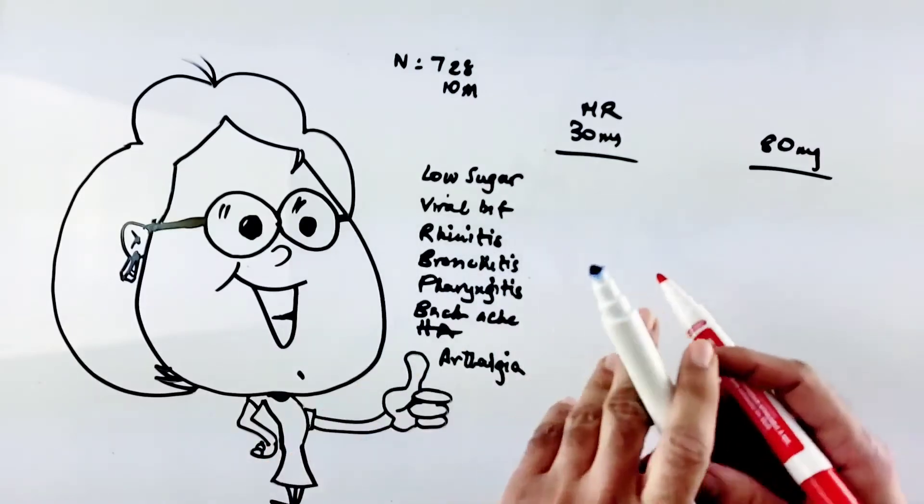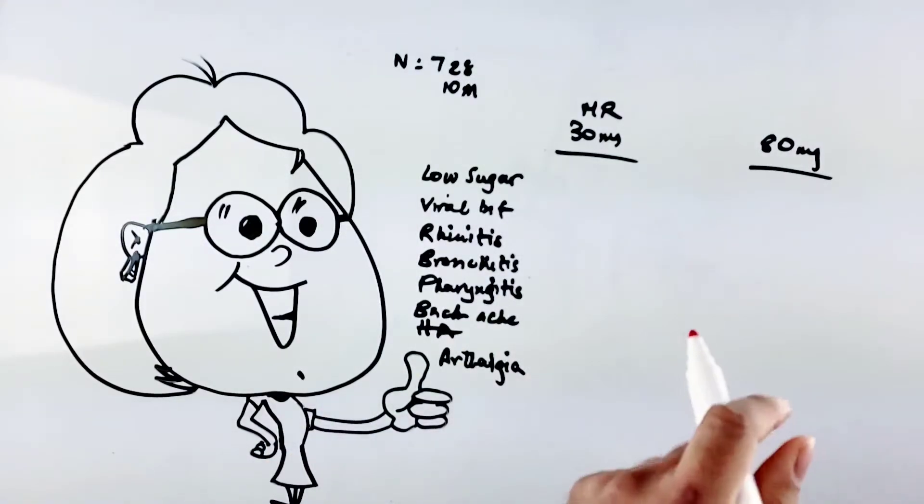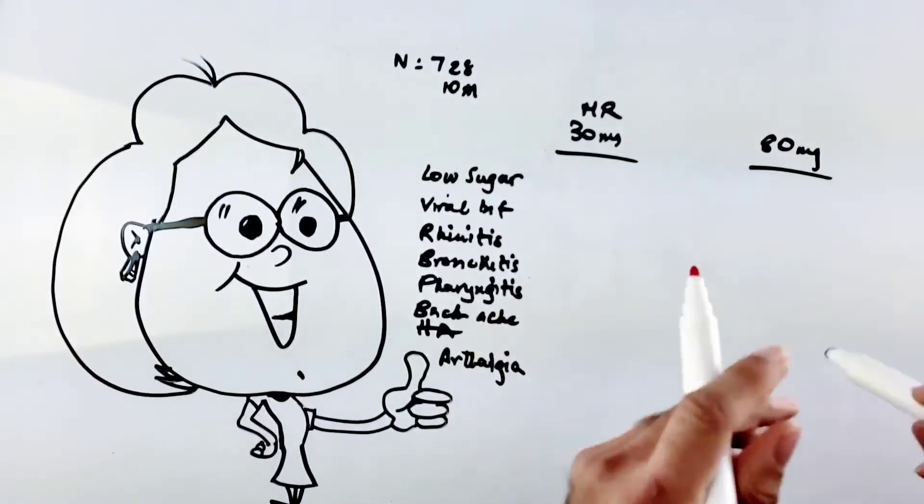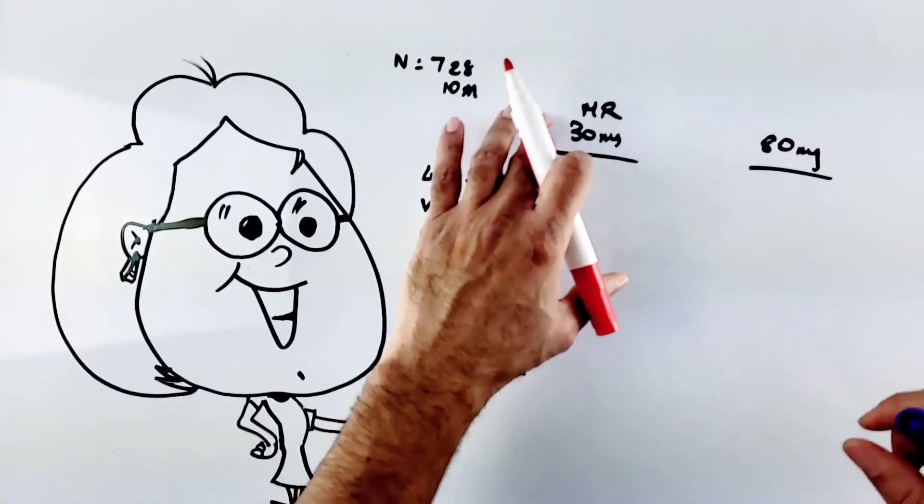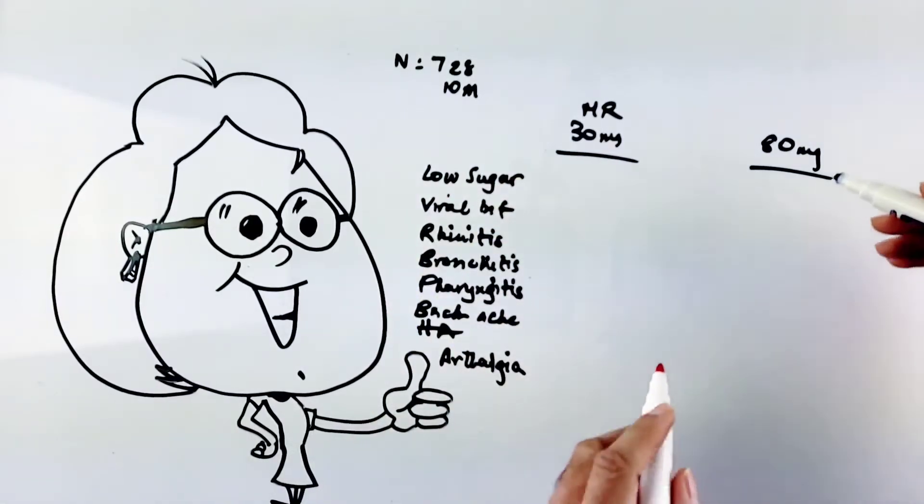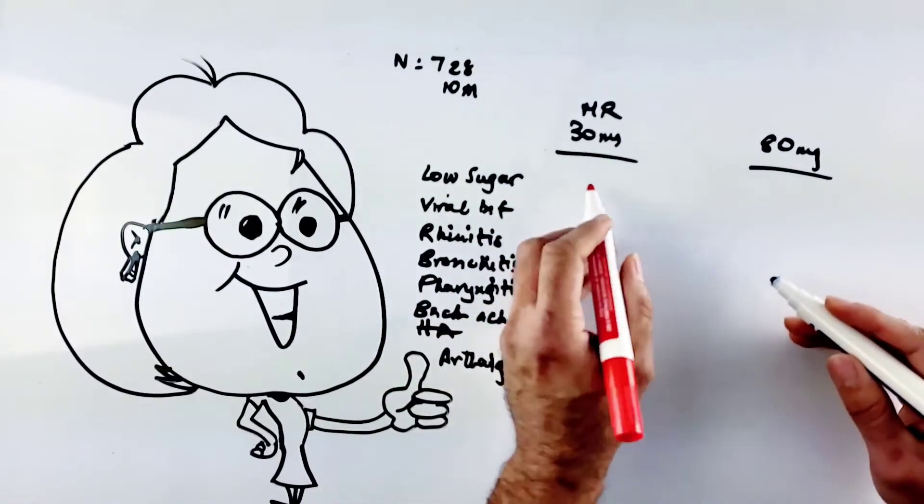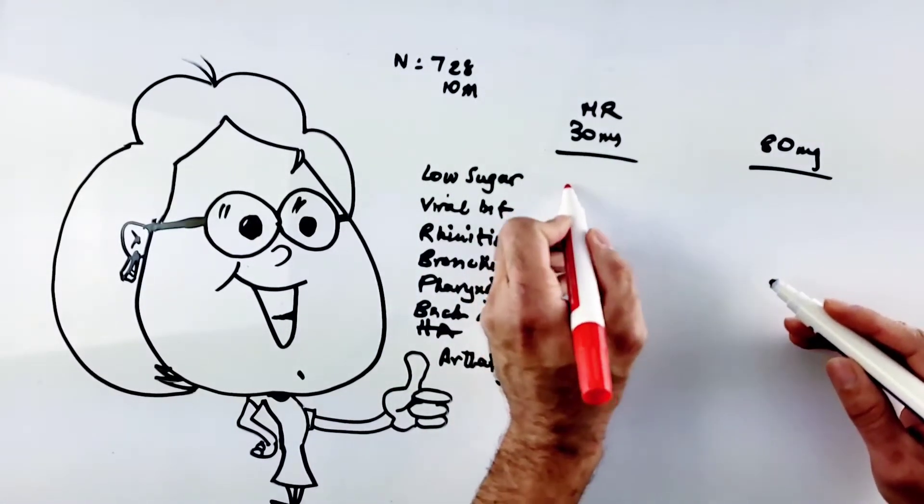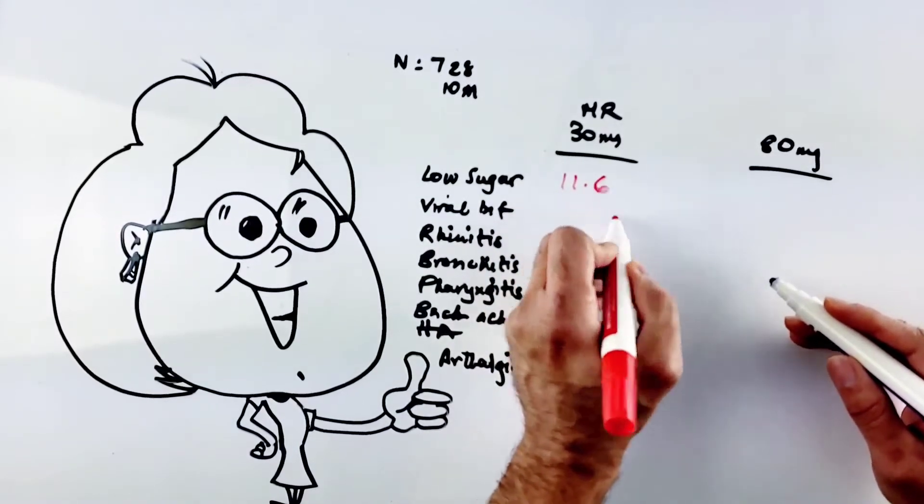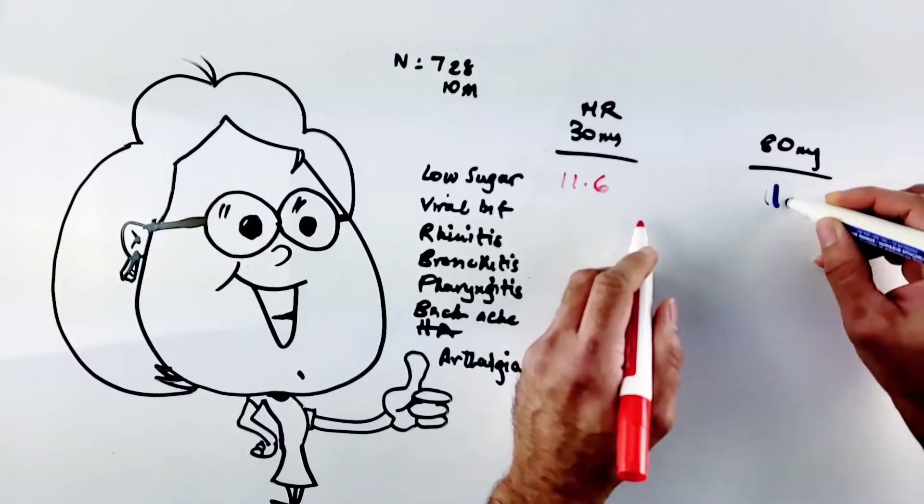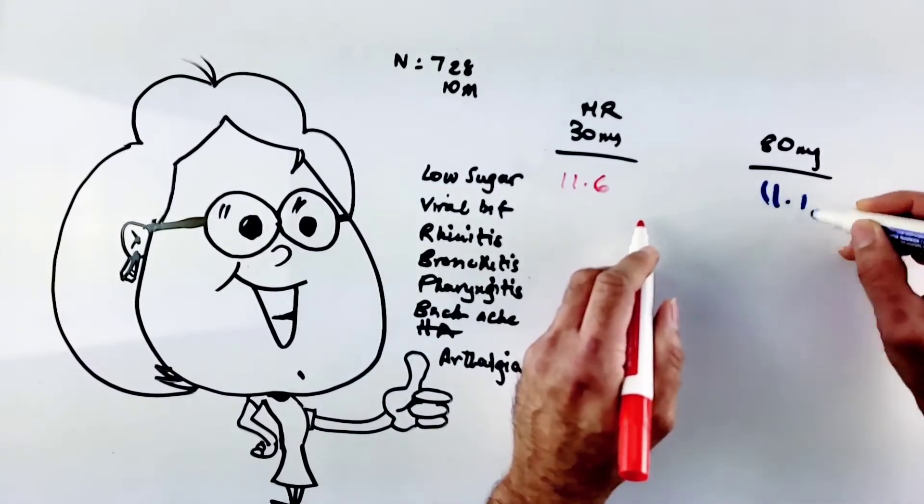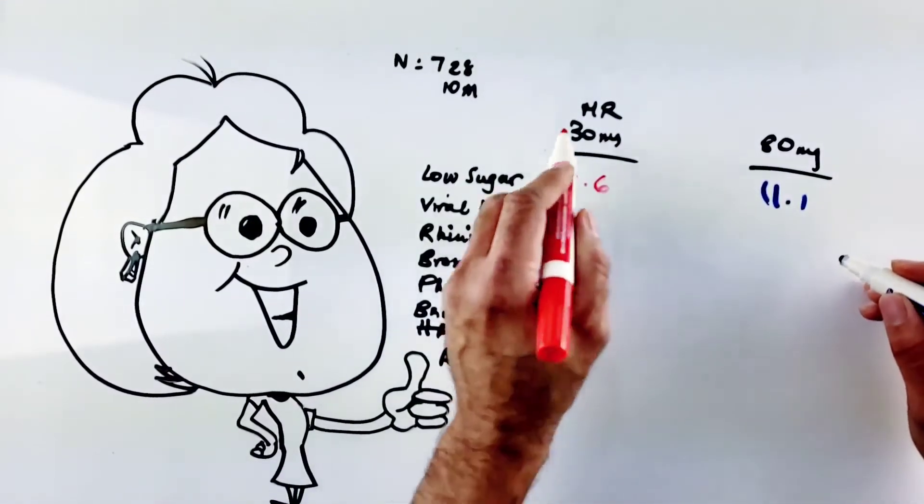What I did here is I put the regular strength 80 milligrams versus the modified release equivalent 30 milligrams once a day. For the MR, the incidence of low sugar was 11.6% whereas in the regular strength the incidence was 11.1%, so very similar even though this is once a day and this is twice a day.